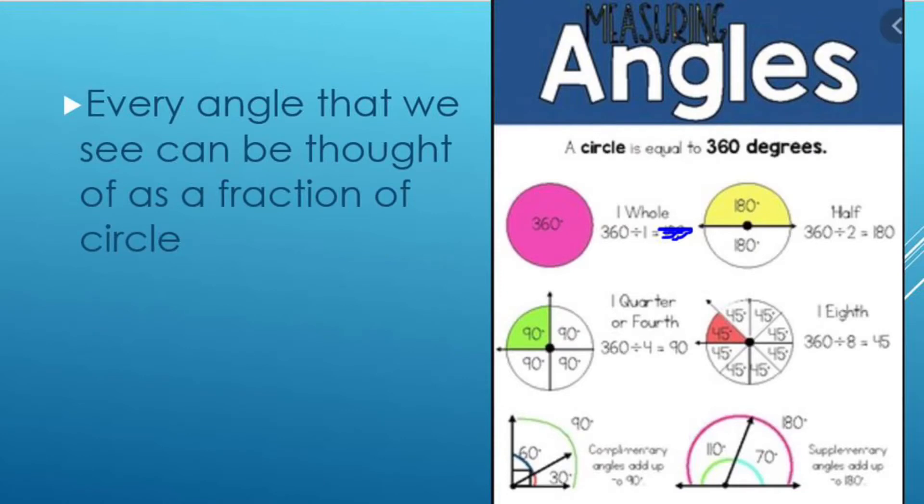Take a look at the image to the right. A circle is equal to 360 degrees. So if I have one whole circle and I have 360 degrees divided by one, we have 360.